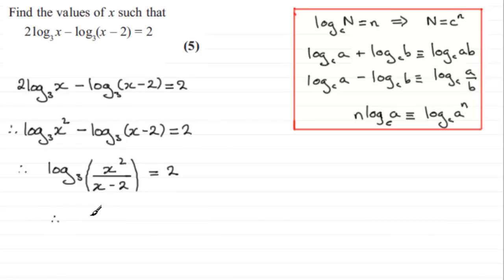So if we compare this, we can remove the log by saying that x squared over x minus 2, that part there corresponds to the big N here, so I've written it here, equals the base, which is 3 to the power of 2. That little n there, which is the 2 in my example, goes up there as a power. So x squared over x minus 2 equals 3 squared.